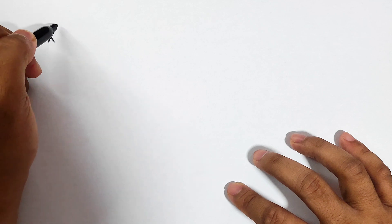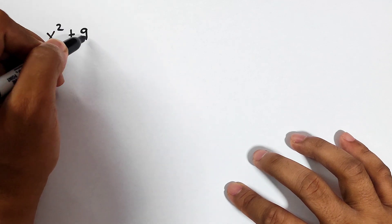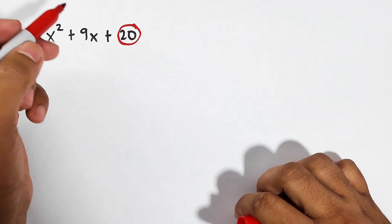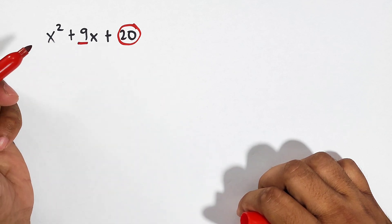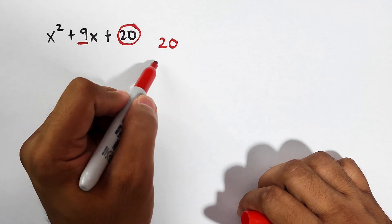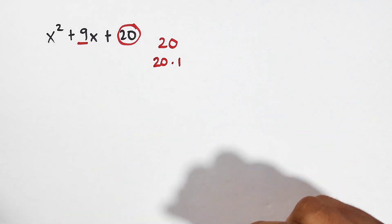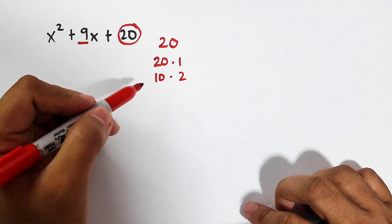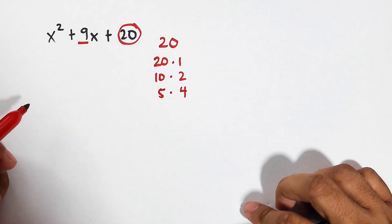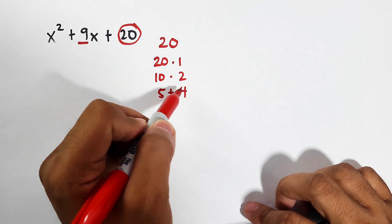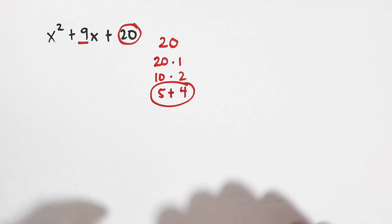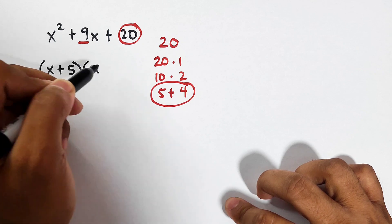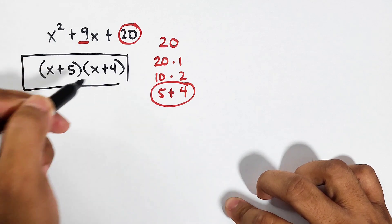Now let's go with item number 2. We have x squared plus 9x plus 20. Our constant is 20. We need to think of the factors of 20 that will add up to positive 9. The factors are 20 times 1, 2 times 10, and 4 times 5. As you can see, 4 times 5 will give us the sum of 9. So the factors of this expression are x plus 5 times x plus 4.